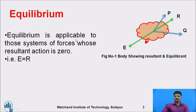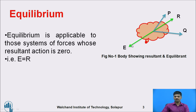Equilibrium is applicable to those systems of forces whose resultant action is zero. That is, E is equal to R, where R is the resultant and E is the equilibrium. By considering forces P and Q, you identify the resultant force R. The equilibrant has the same magnitude as R but acts in exactly the opposite direction. The line of action is the same — same magnitude, but the direction is different.